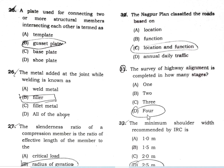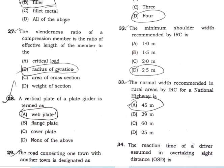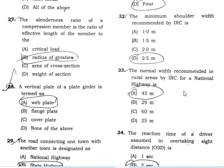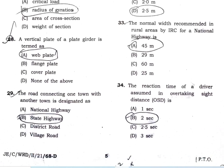The stages of highway alignment survey proceed from preliminary survey, to primary studies, and then to detailed studies. The minimum shoulder width recommended by IRC is 2.5 meters in the case of national highways.